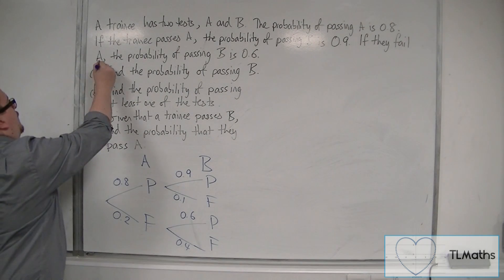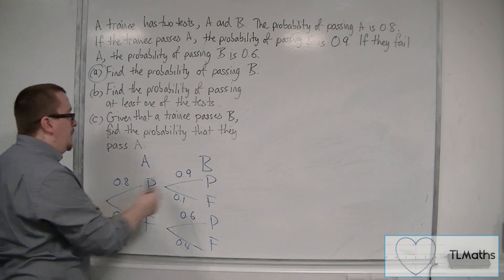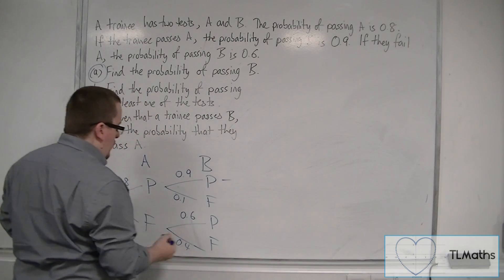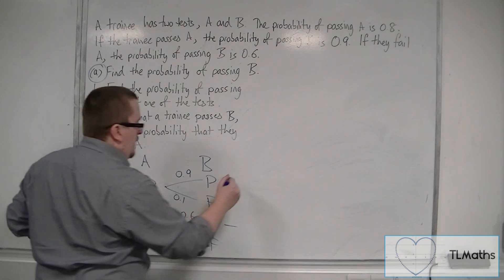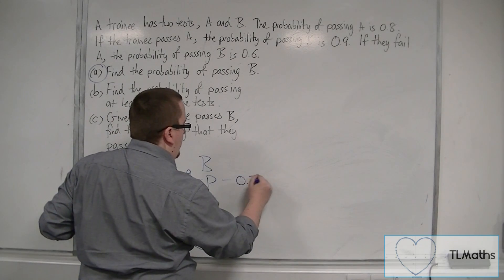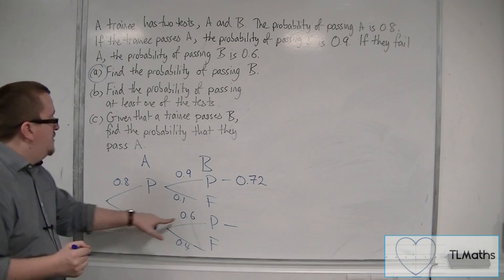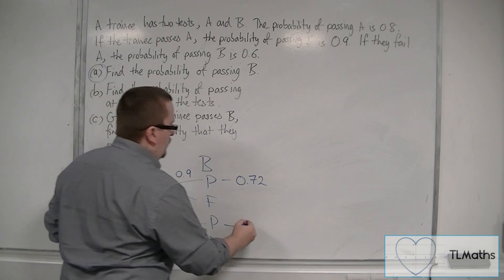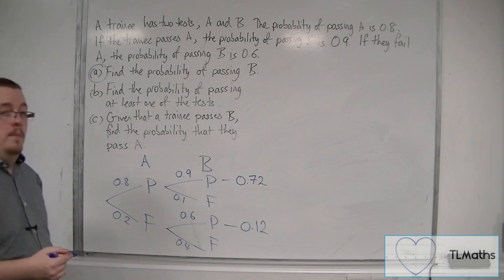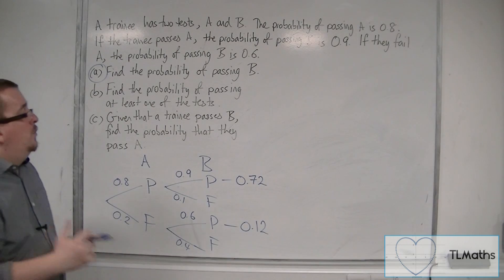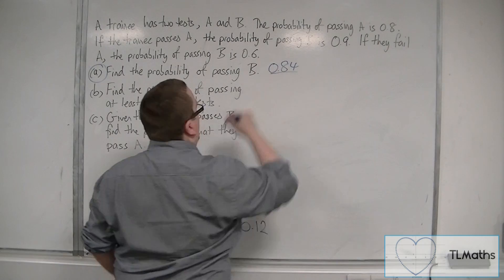First of all, find the probability of passing B. There are two ways of passing B — you can either pass A or fail A. So you have 0.8 times 0.9, which is 0.72. Or you've got fail then pass, so 0.2 times 0.6, which is 0.12. Adding those two probabilities together, we get 0.84. So that's the probability of passing B.